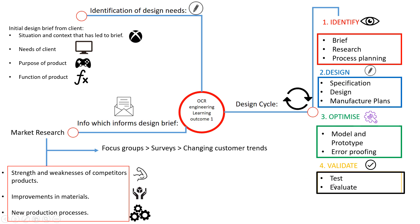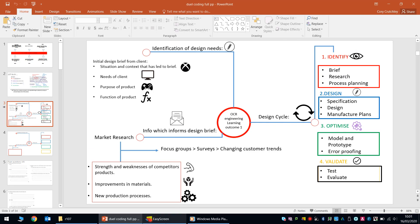Finally, 'Validate' — we look at ways to test and evaluate our product. We can link it back to the client, carry out product testing, and evaluate it against the specification. The main thing to understand is that exam questions will ask you to identify or name sections of this cycle — such as 'Identify,' 'Optimize,' or 'Validate.' You need to understand what each section is, how it works, and what information you need to learn. That's OCR learning outcome one: the design cycle.